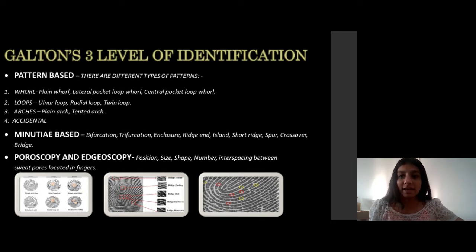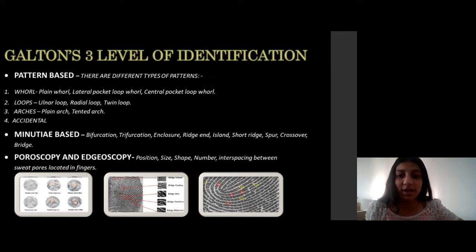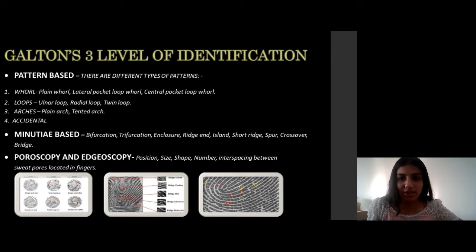The second level was minutiae. In a person, 80 to 100 minutiae can give a good fingerprint. Minutiae can be bifurcation, trifurcation, ridge, island, and so on.